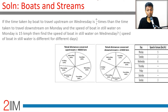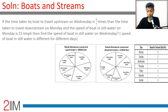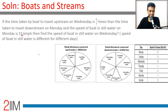Wednesday upstream time is six-sevenths of the time taken to go downstream on Monday. Downstream on Monday: 14 percent of the total distance of 2400 km is traveled downstream on Monday. The still water speed on Monday is 15 km/h and stream speed is 5 km/h, so downstream speed is 20 km/h. Distance is 14 percent of 2400.